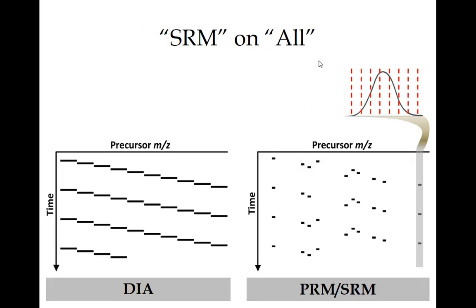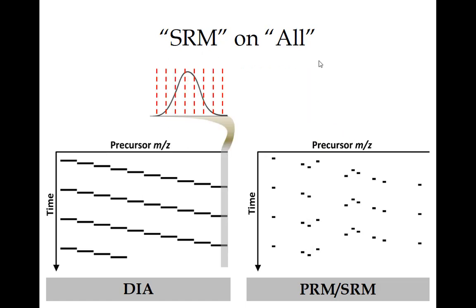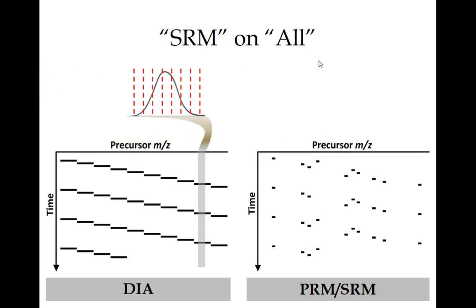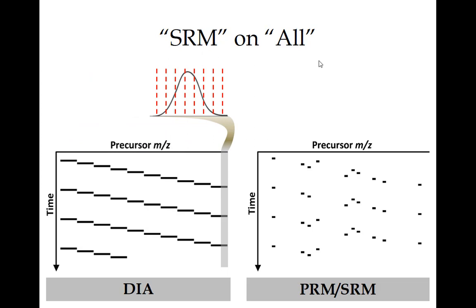This is where people say DIA is like SRM on all — because in SRM or PRM you acquire these consistent chromatographic measurements, but only on a predetermined set of peptide precursors. Whereas in DIA, we acquire comprehensive data, so we can in theory extract any peptide we want. It doesn't mean it's going to be detected, but we can make that query — and that's an important distinction.